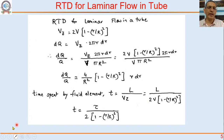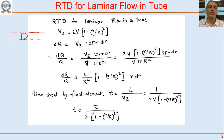Consider micro-reactors — we talked about them when we discussed exothermic reactions and high surface area per unit volume. In a micro-reactor, dimensions are so small that we get laminar flow, and laminar flow means a parabolic velocity distribution. Different packets of fluid at different radial locations travel at different speeds: a packet at the center goes very fast and spends less time in the reactor, while a packet near the wall moves slowly and takes a long time to come out.